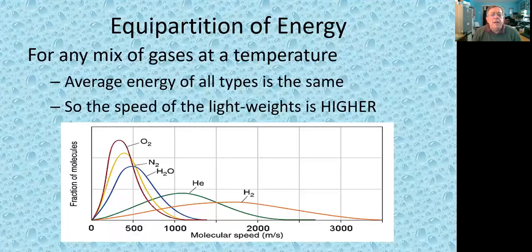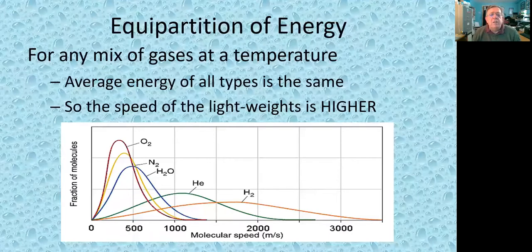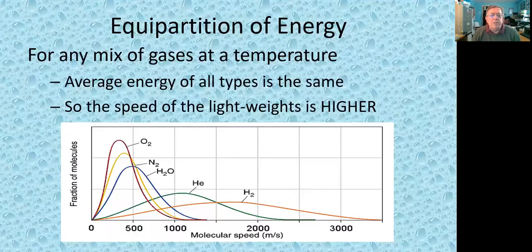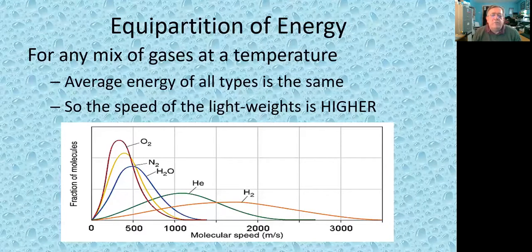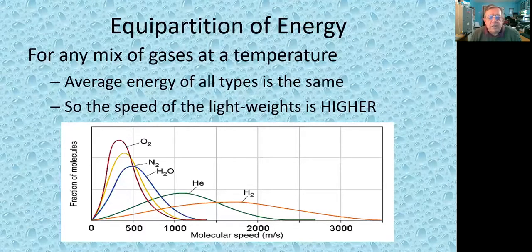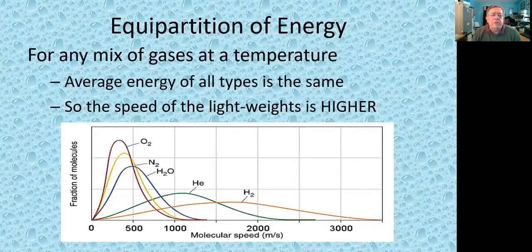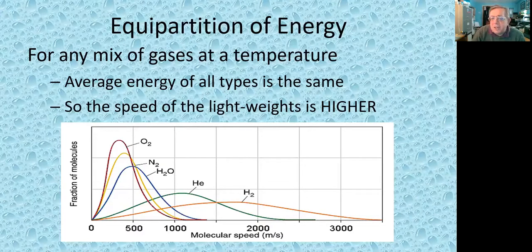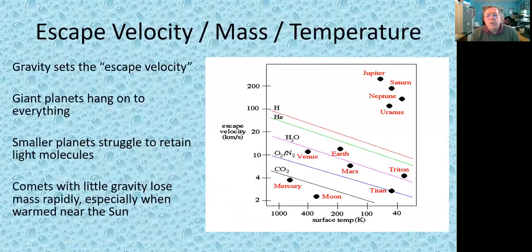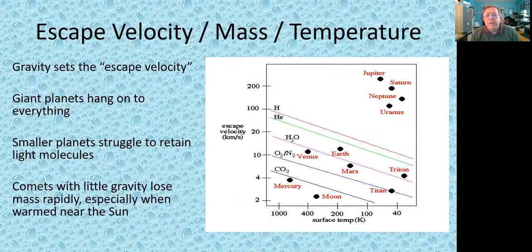...then that atmosphere will be at a particular temperature and the energy of the molecules will be distributed between the different types equally, so that all the types have the same energy. It's a law of physics called the equipartition of energy. And what this means is that the speed of the lighter molecules must be greater because the energy is half the velocity squared times the mass. And so if the velocity has to go up, if the mass goes down, you can see that hydrogen will be moving faster than helium, faster than water and then nitrogen and then oxygen.